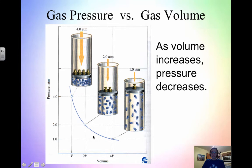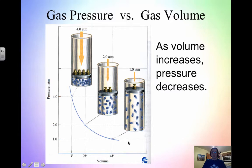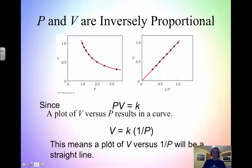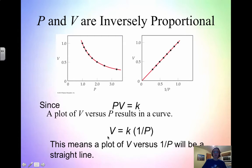Graphically, you looked at these relationships in the lab. As volume increases, pressure decreases, giving you a nice curve on the pressure-versus-volume graph. Notice it's not linear — it is exponential. Therefore, pressure and volume are inversely proportional. If you plot volume versus one over pressure, or pressure versus one over volume, that gives you a straight line, representing the inverse relationship.